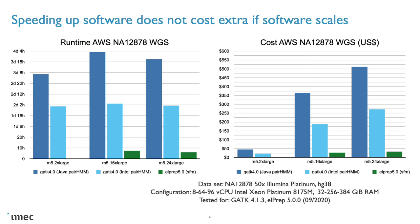We have also performed a scaling experiment on Amazon Web Services where we execute the software on different server instances with varying CPU and RAM resources. The graph on the left compares the runtime of GATK versus Lprep — GATK scales somewhat with more resources, but Lprep generally scales better. The graph on the right shows the cost of running the benchmark on a specific server. The cost of GATK steeply goes up with more resources because it doesn't scale as well. In contrast, the cost with Lprep is more or less stable. This shows that running software faster using more hardware resources does not necessarily have to be more expensive, provided that your software scales, which Lprep does.